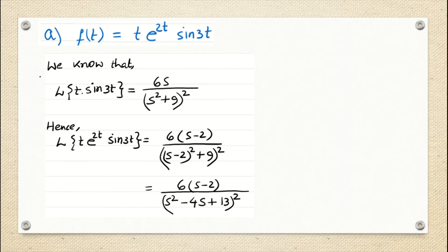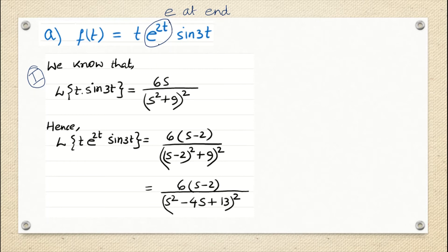We are going to use two steps. Remember that we said 'e at end' — so in the Laplace transform, we will keep e raised to at a little aside and then work on anything other than e raised to at that is present. In our case, we have t·sin 3t, so we will say f(t) is t·sin 3t. We will deal with e raised to at a little later.